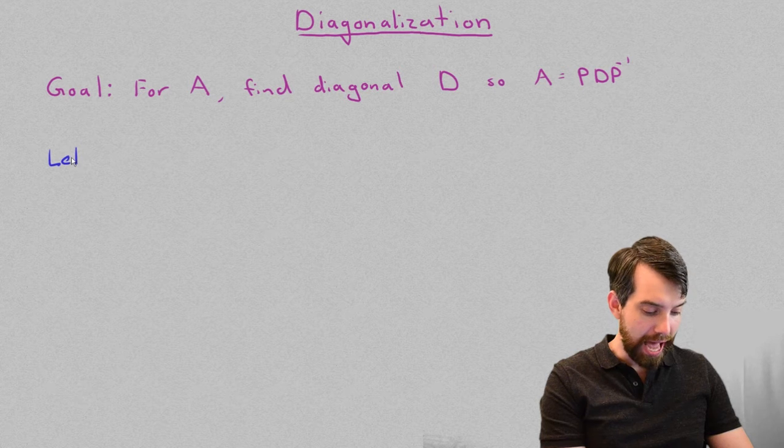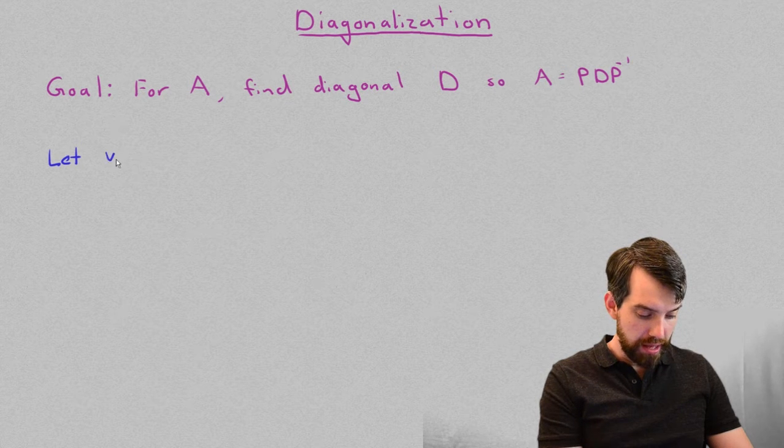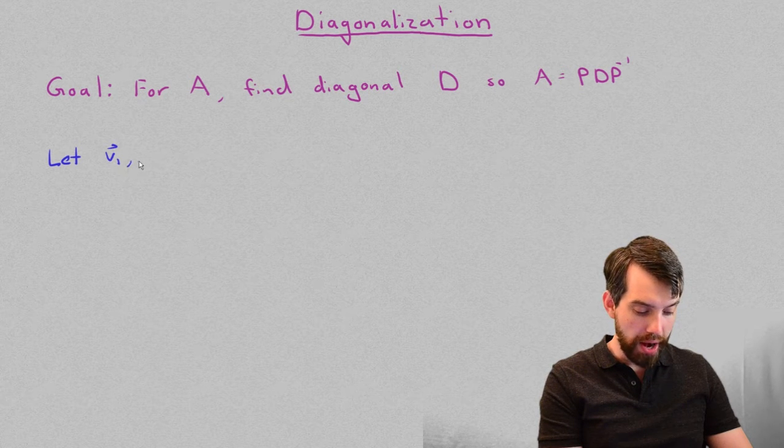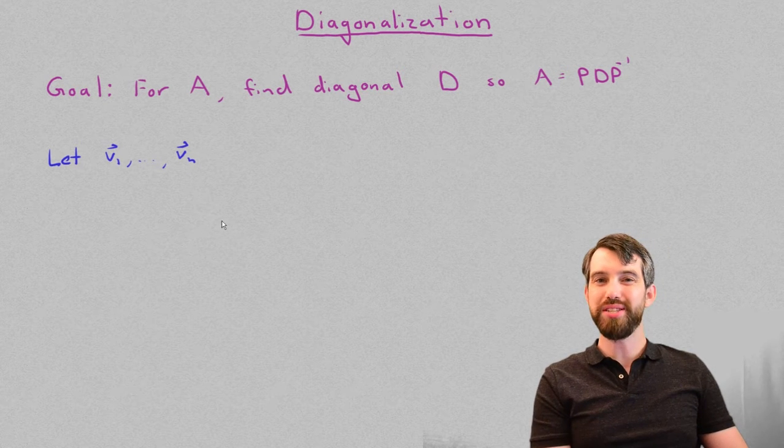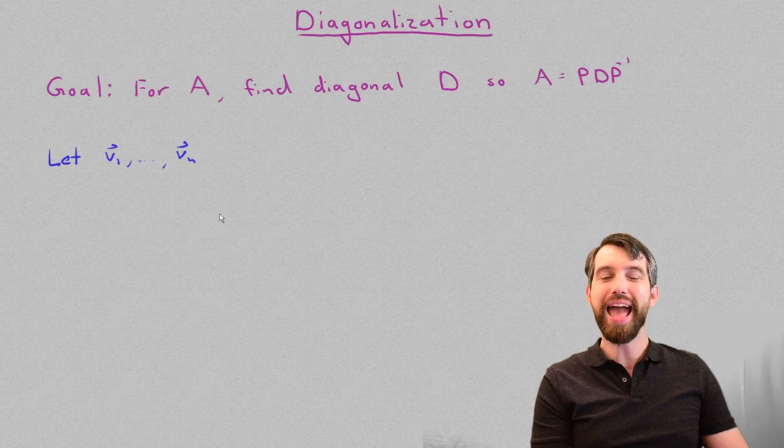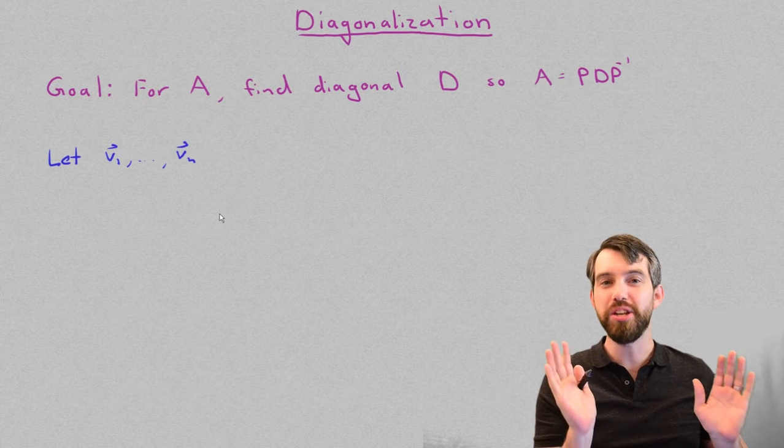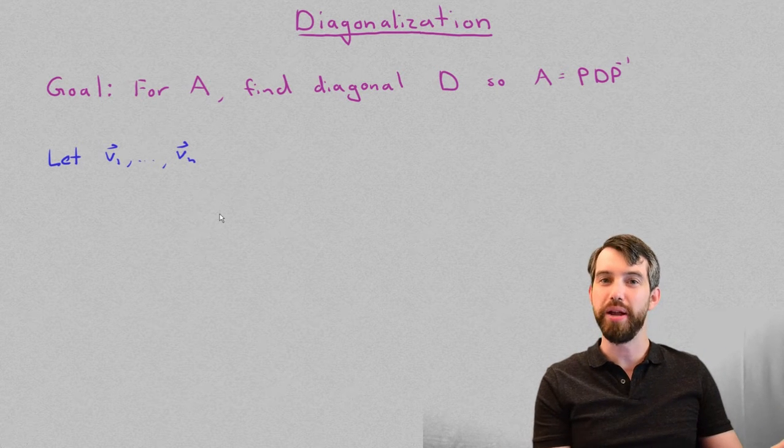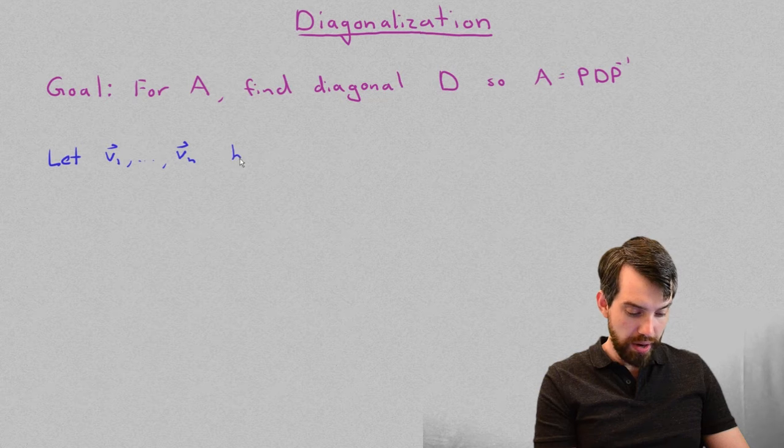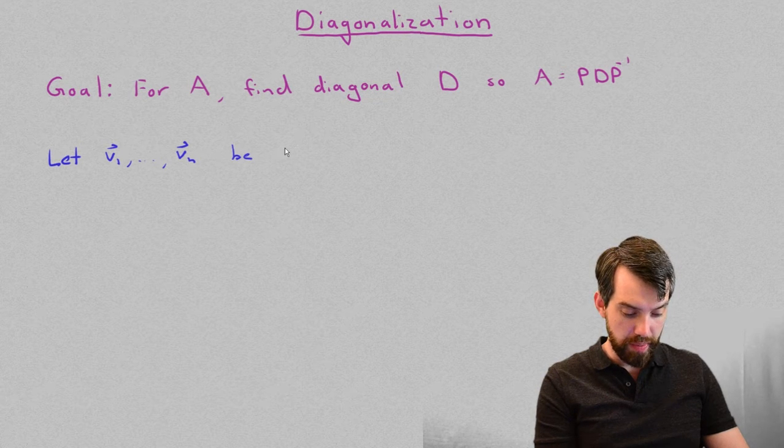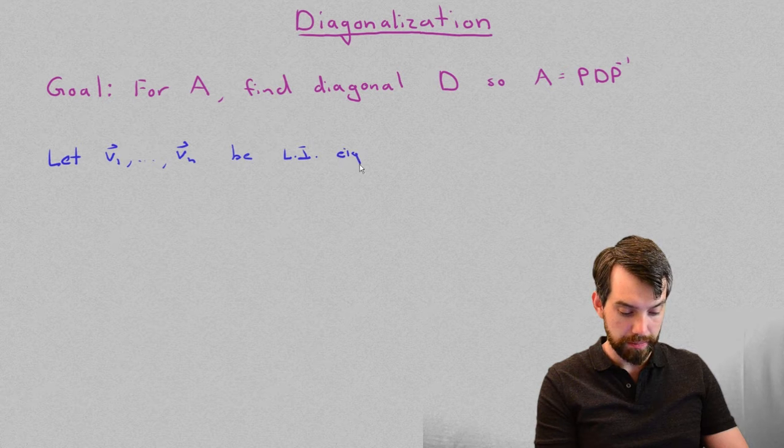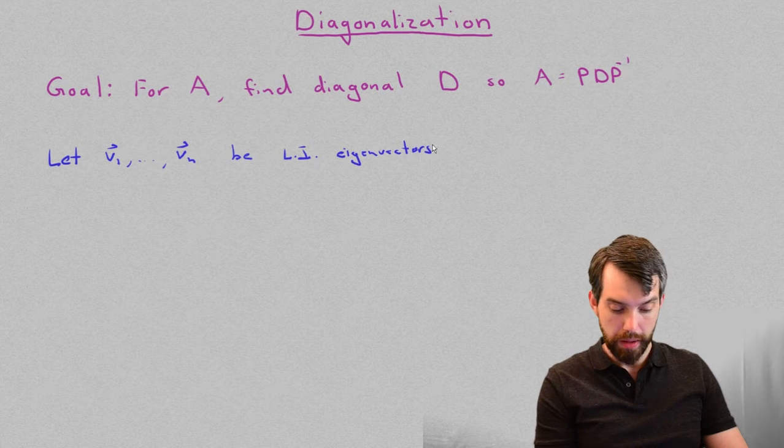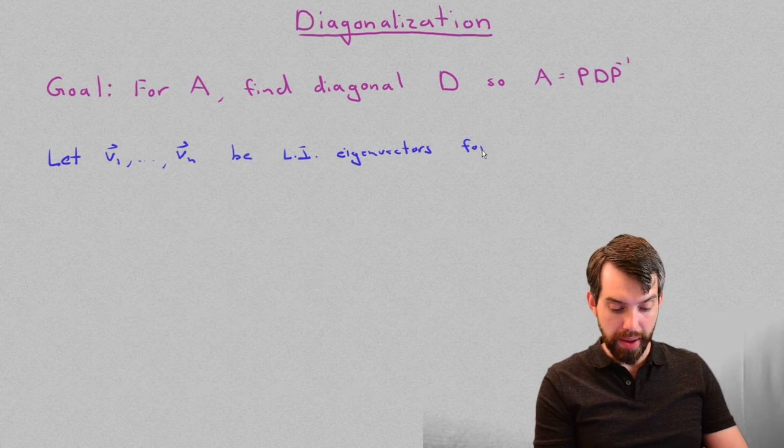In other words, I am going to let some vectors v1 down to vn. And they're not just n different eigenvectors, they're n different linearly independent eigenvectors for a matrix A. So I'm going to assert that these are going to be linearly independent eigenvectors for a matrix A.